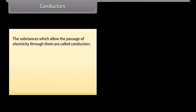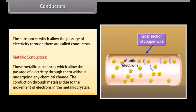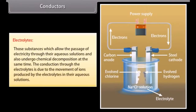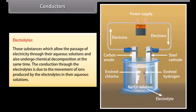Conductors. Substances which allow the passage of electricity through them are called conductors. Conductors can be classified into two categories: metallic conductors and electrolytes. Metallic conductors are those metallic substances which allow the passage of electricity through them without undergoing any chemical change; conduction through metals is due to the movement of electrons in the metallic crystals — for example, copper and silver. Electrolytes are those substances which allow the passage of electricity through their aqueous solutions and also undergo chemical decomposition at the same time; conduction through electrolytes is due to the movement of ions — for example, acids and bases.